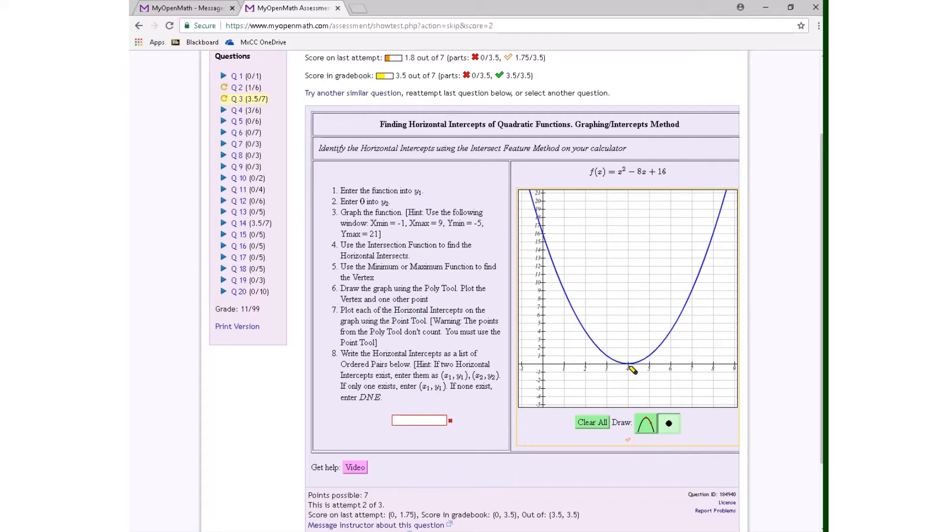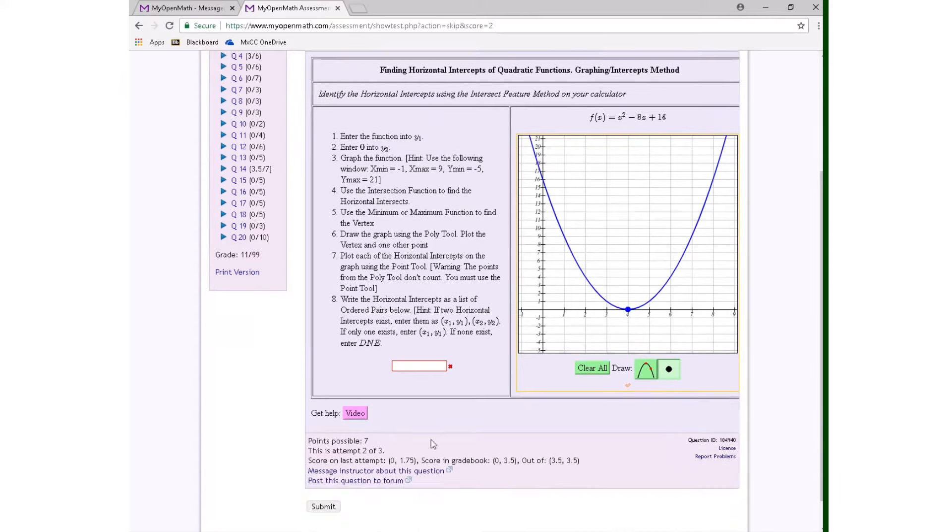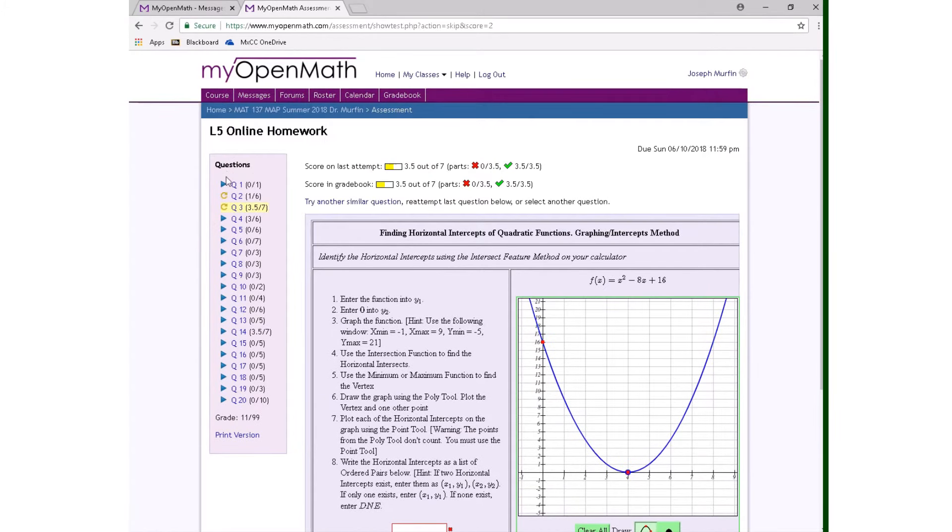So the horizontal intercept was 4. I plotted that using my poly tool, but then I have to go back and also plot the horizontal intercept using the point tool like that. And now it should give me the green square, which is good to go.